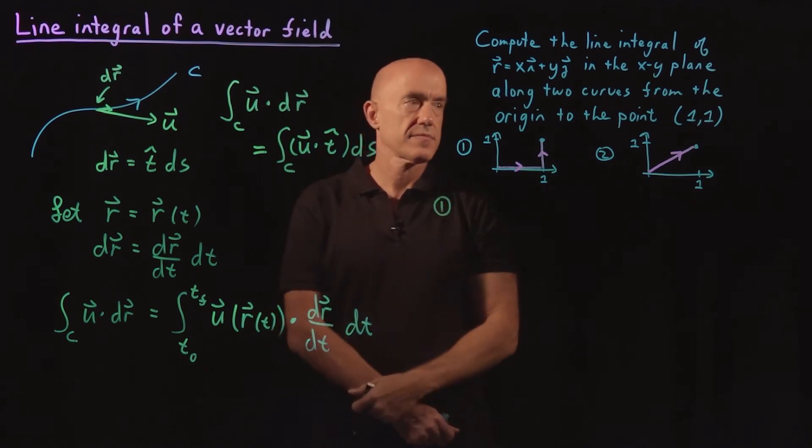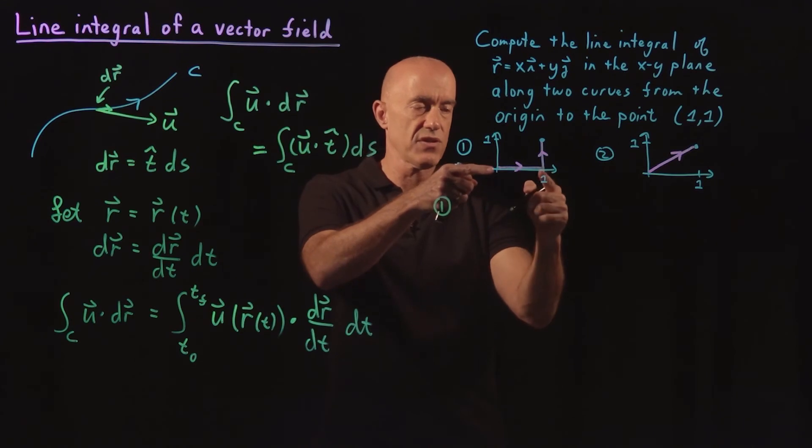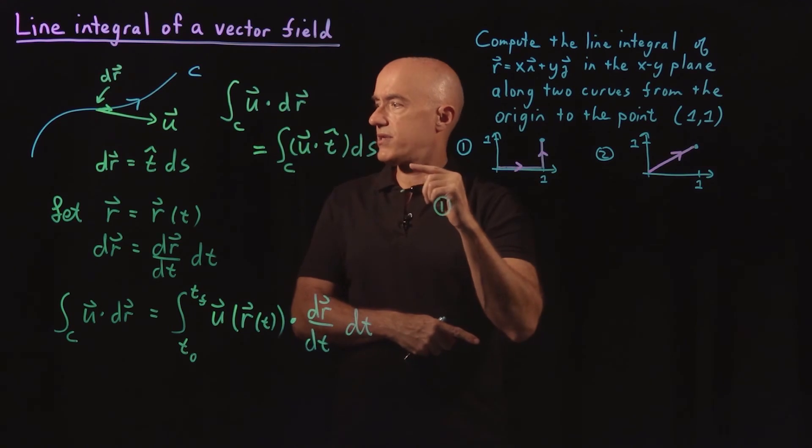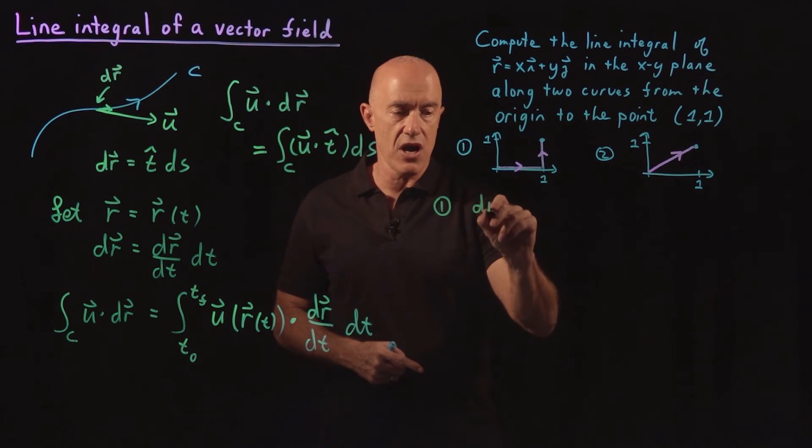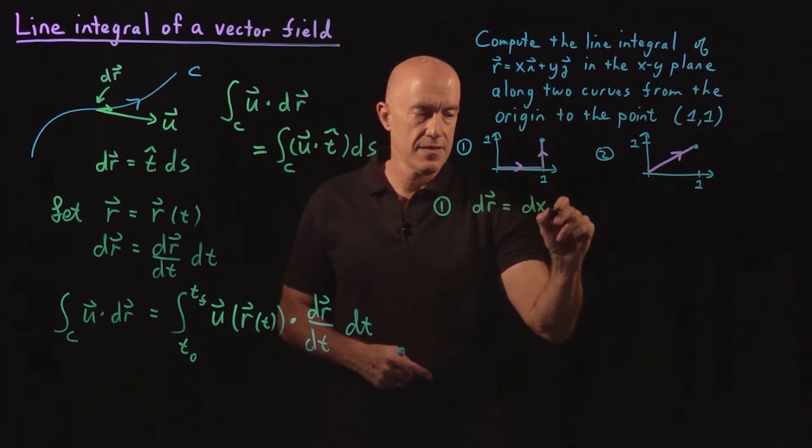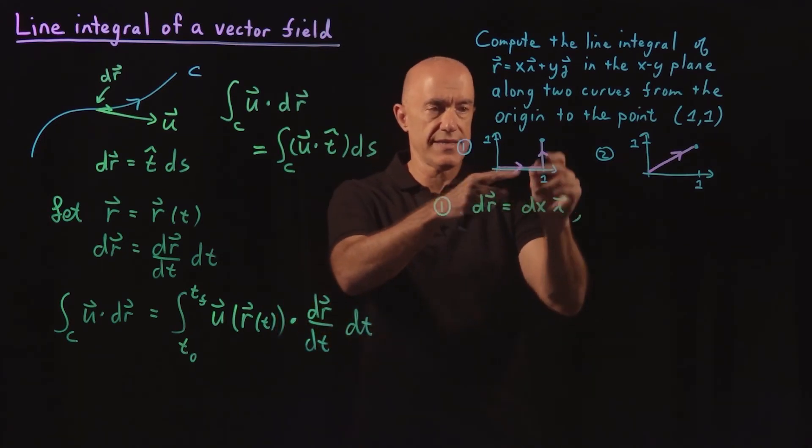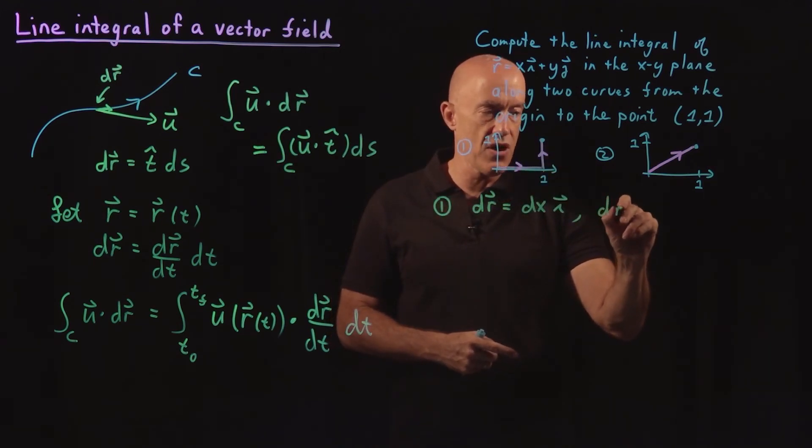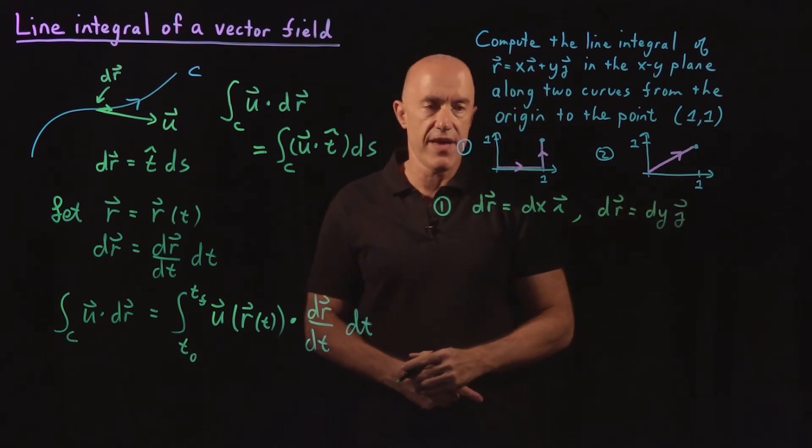Okay, so let's do the first one. We have two line integrals here. The first along the x direction, the second along the y direction. So in the first integral, DR is going to be equal to dx times the i unit vector. In the second integral, along the y direction, DR equals dy times the j unit vector.